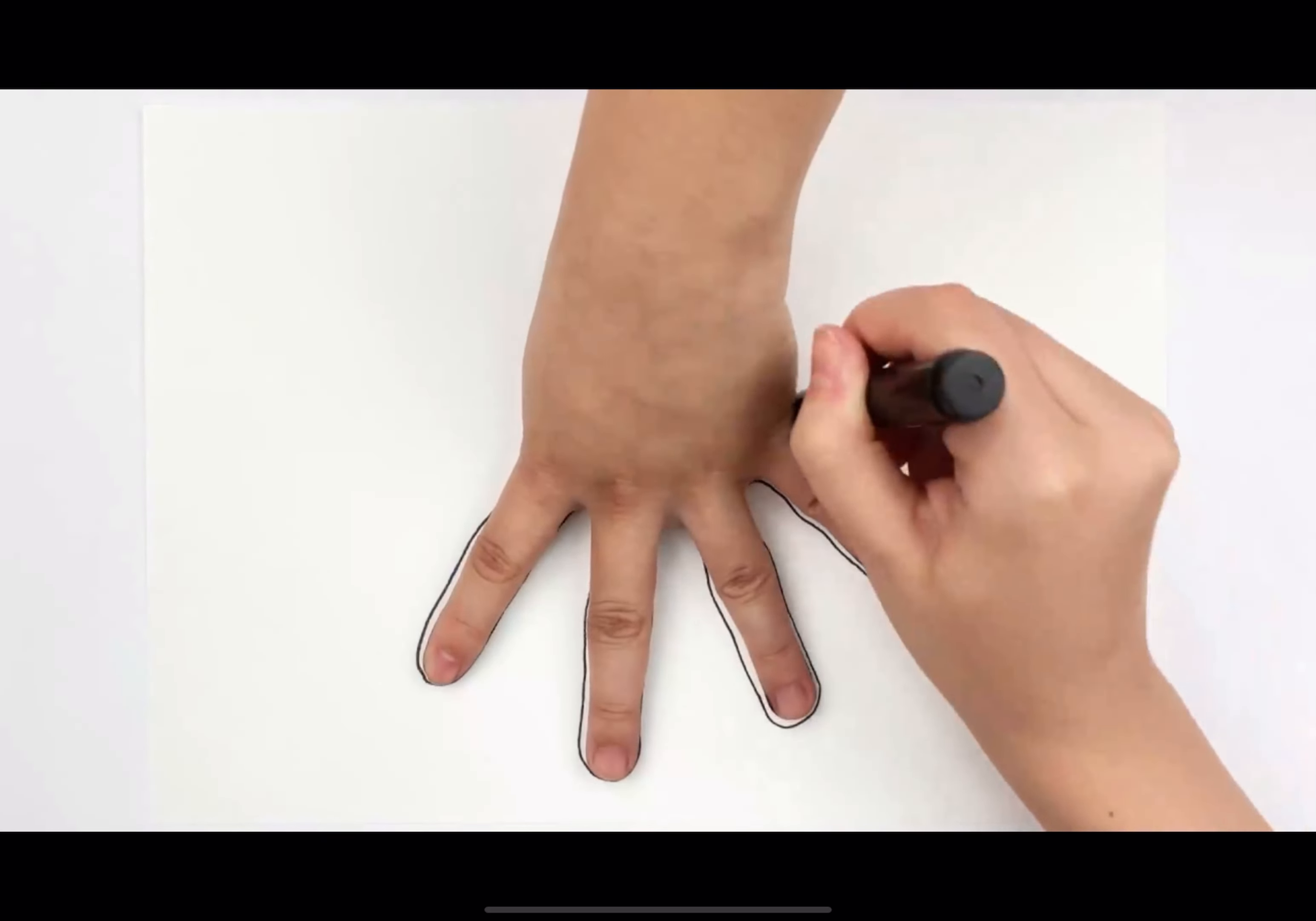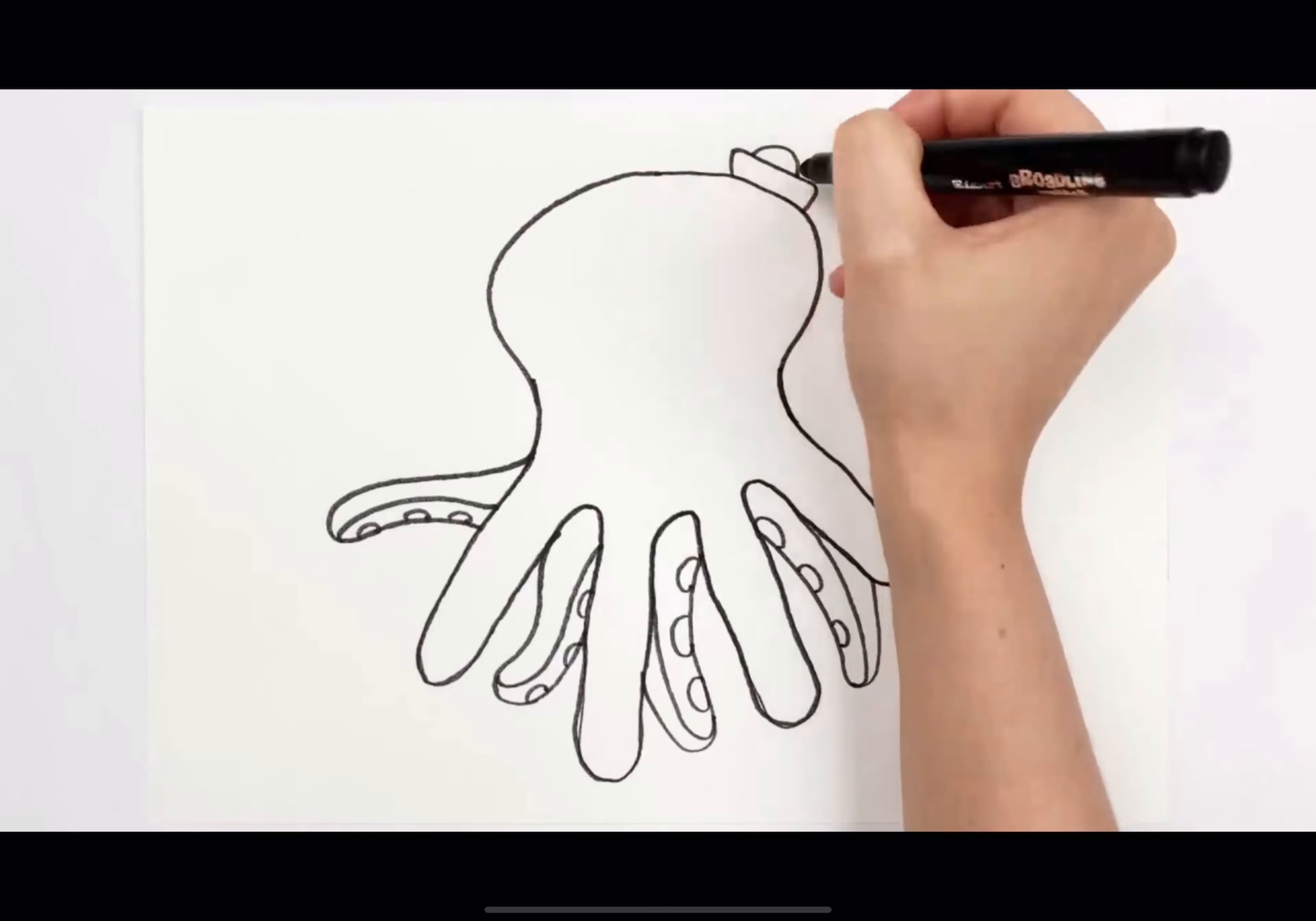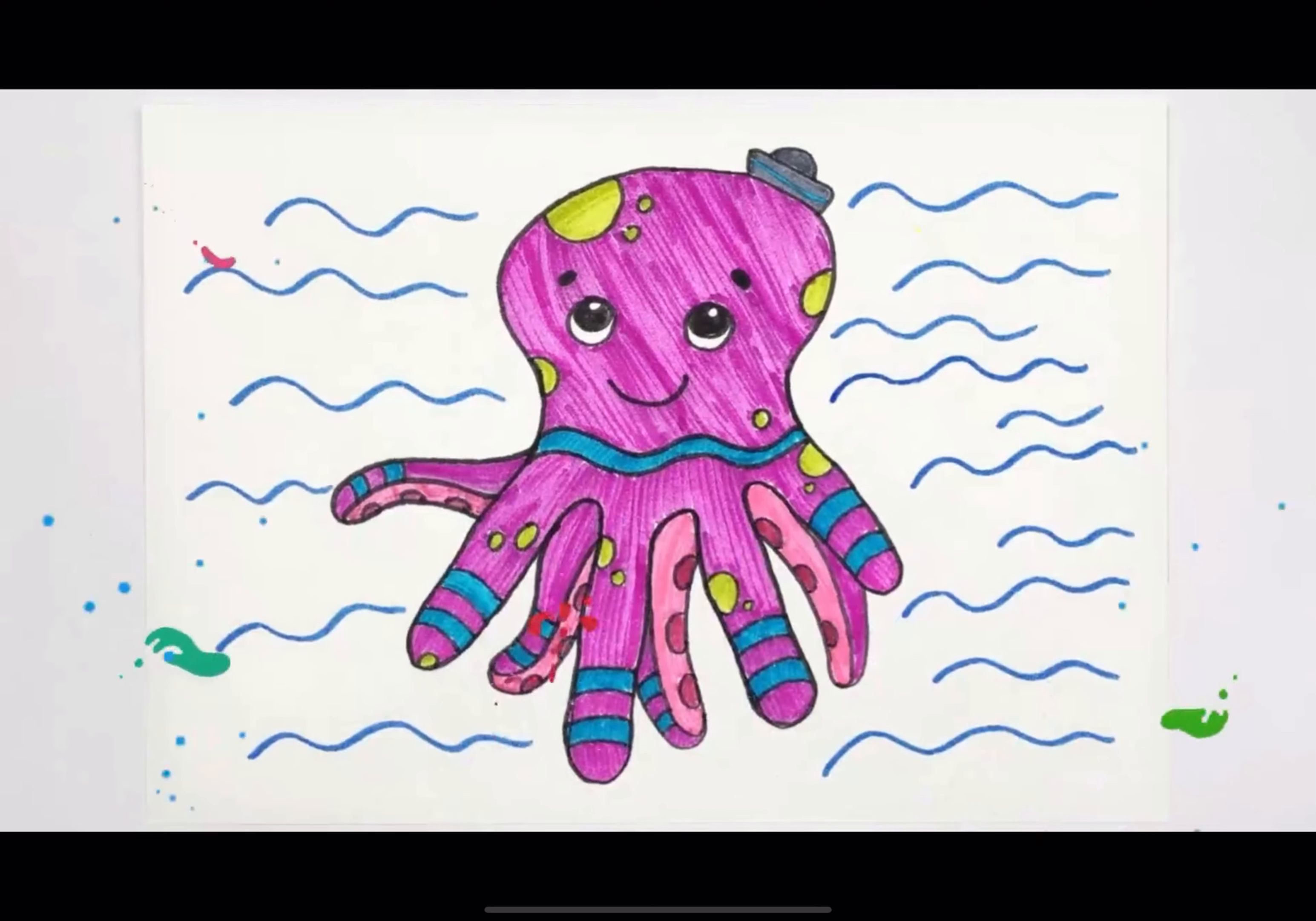Let's see what we can draw on this piece of paper. Wow, it's an octopus.